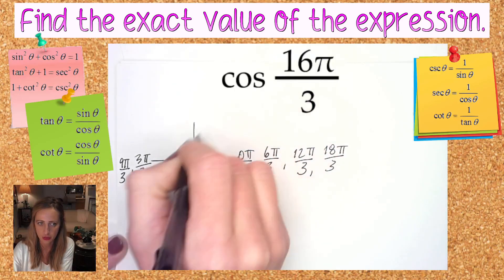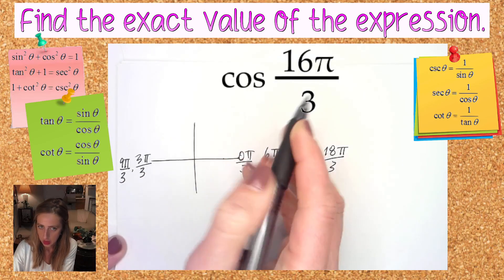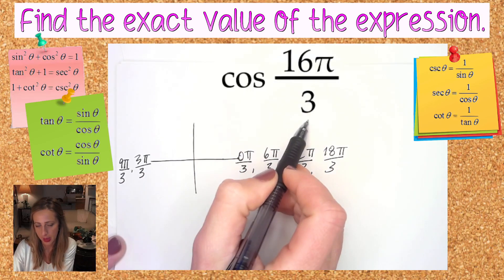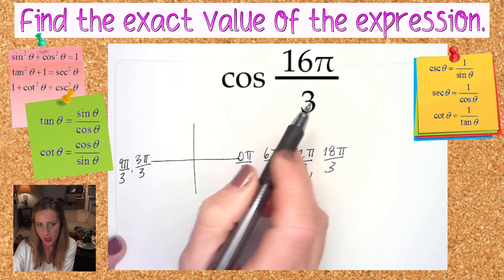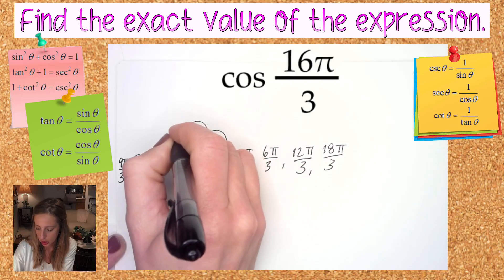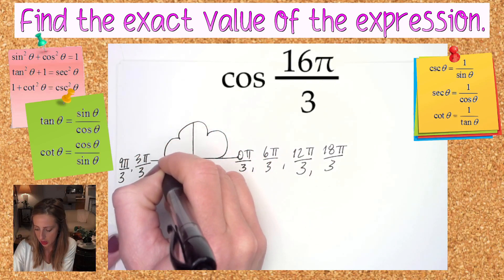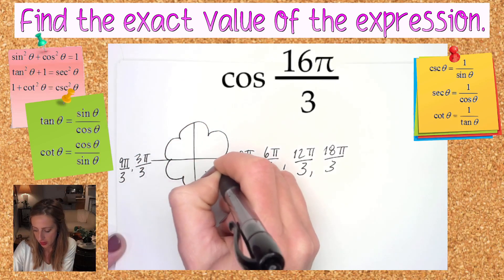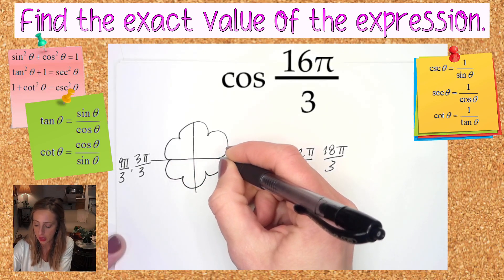So whatever your denominator is, you double it. That's how many flower petals your flower has. So what do I mean? My flower is going to have six petals because of the three. That means three petals on top, three petals on bottom. That's what we're counting.